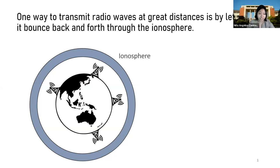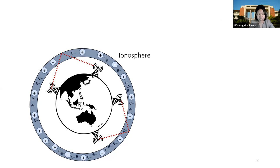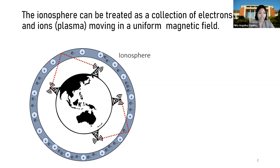One way to transmit radio waves at great distances is by letting it bounce back and forth through the ionosphere. In this region, ultraviolet light from the sun collides with atoms, knocking the electrons loose. This creates ions that cause reflection and absorption of radio waves in this layer. The ionosphere can be treated as a collection of electrons and ions moving in a uniform magnetic field.